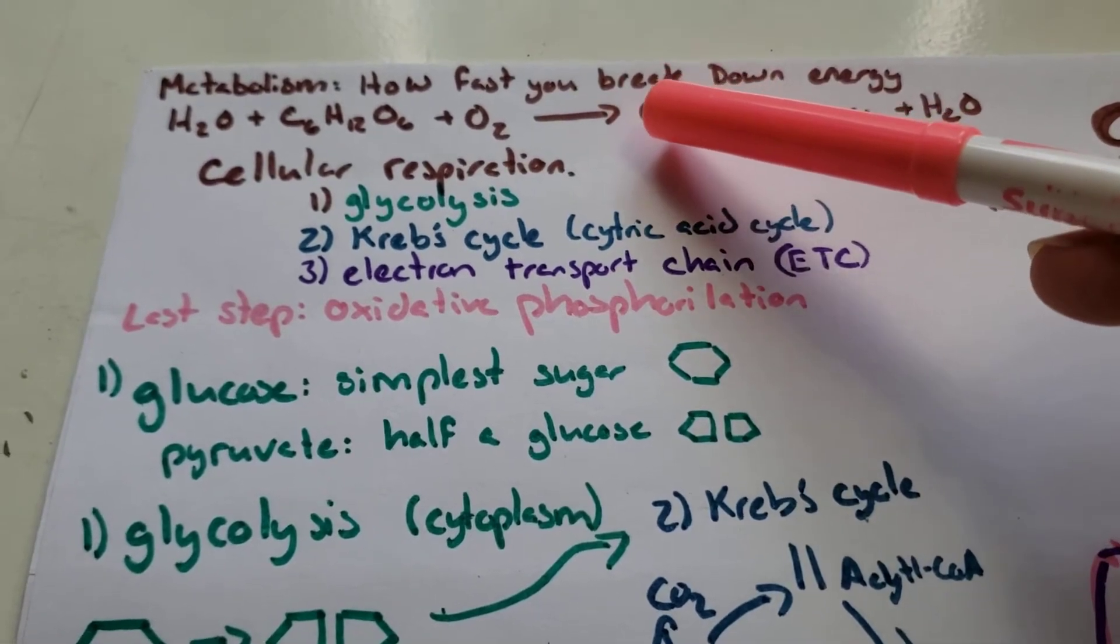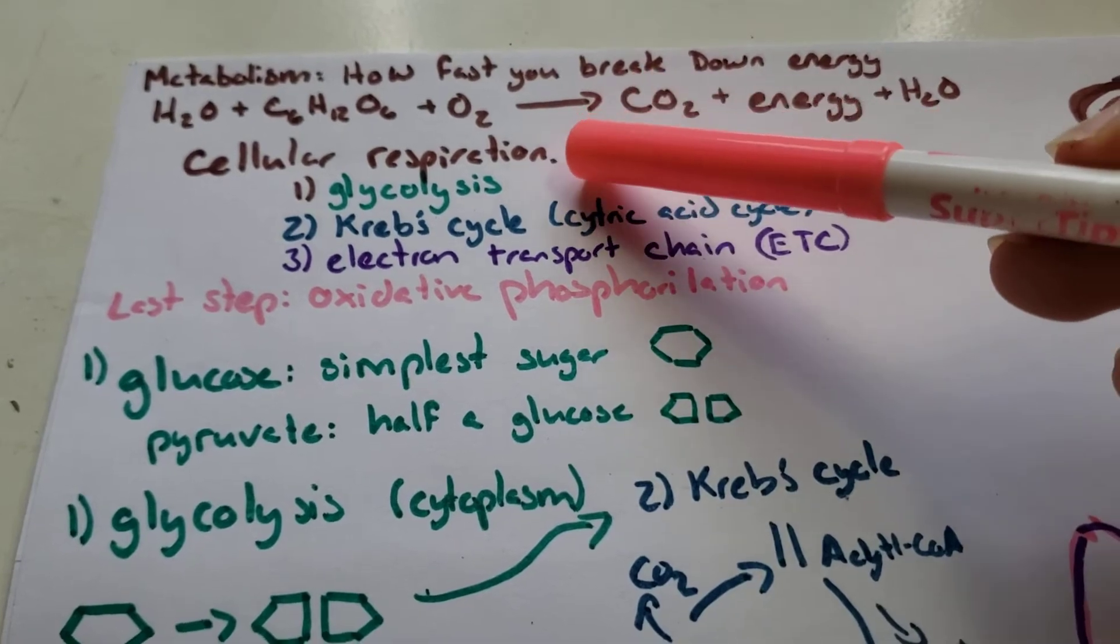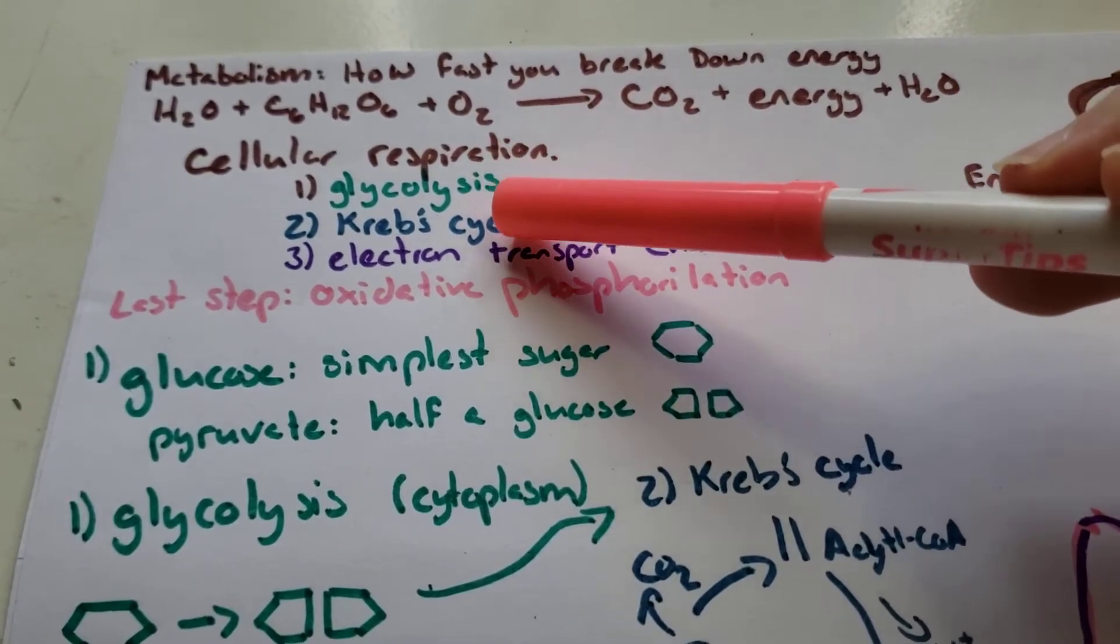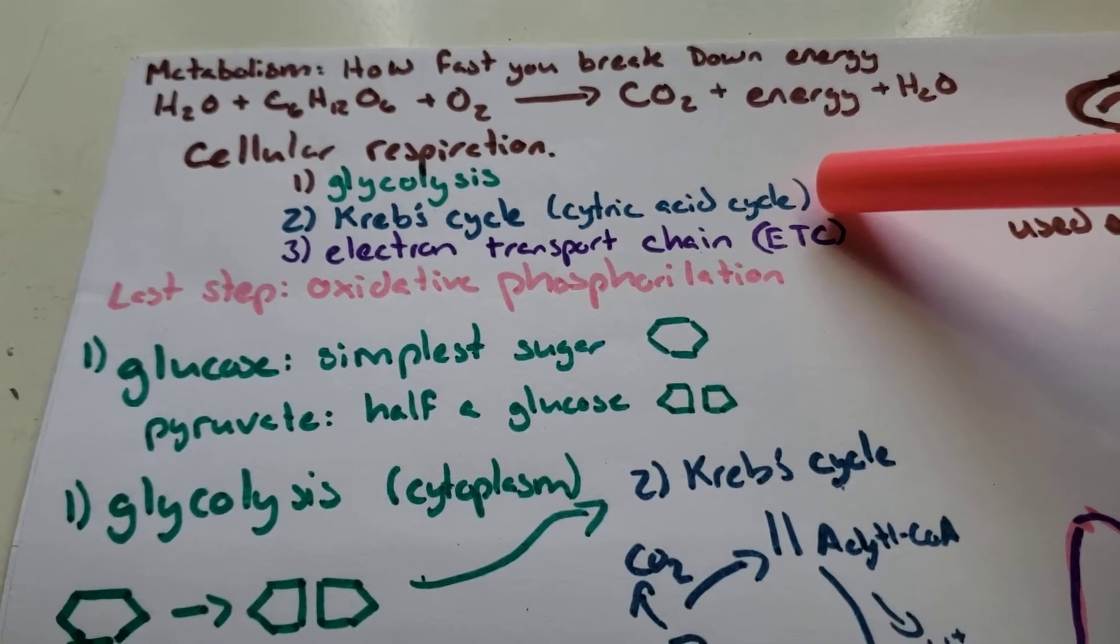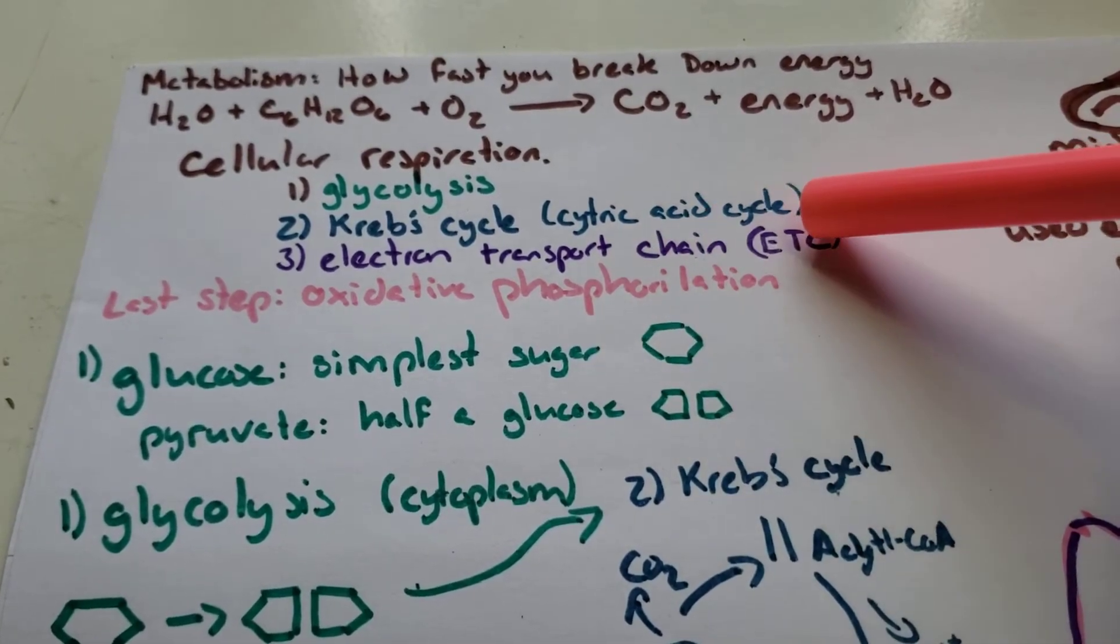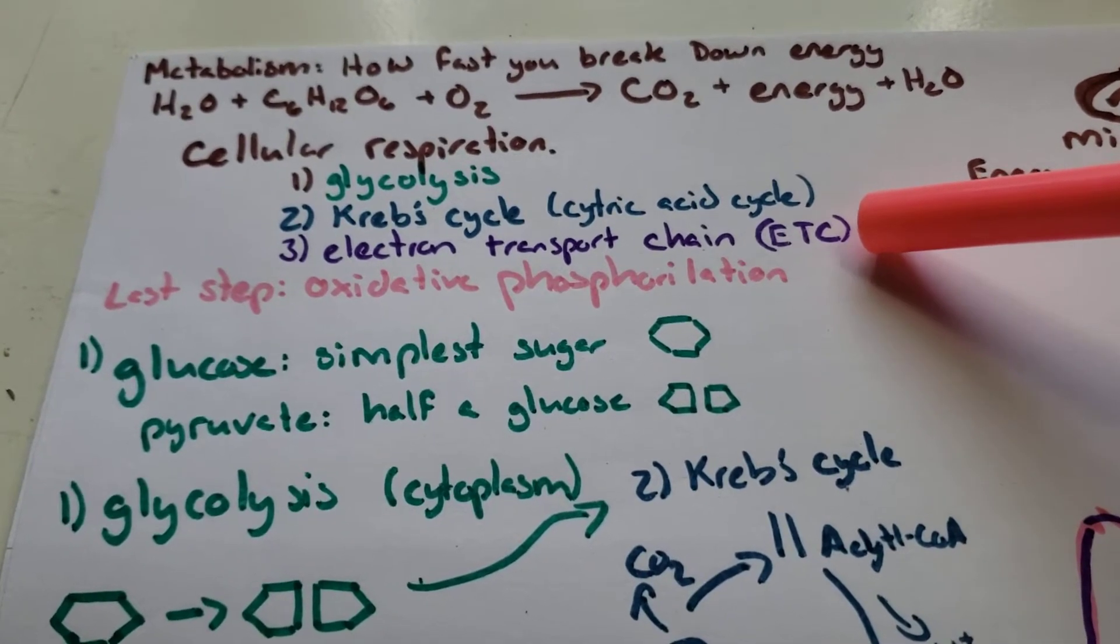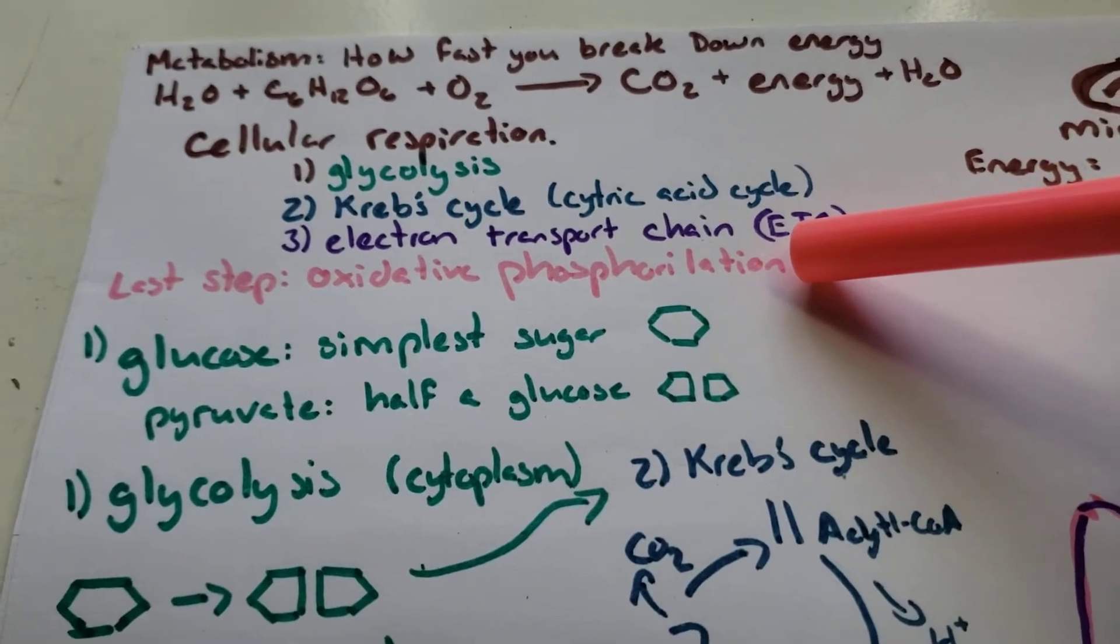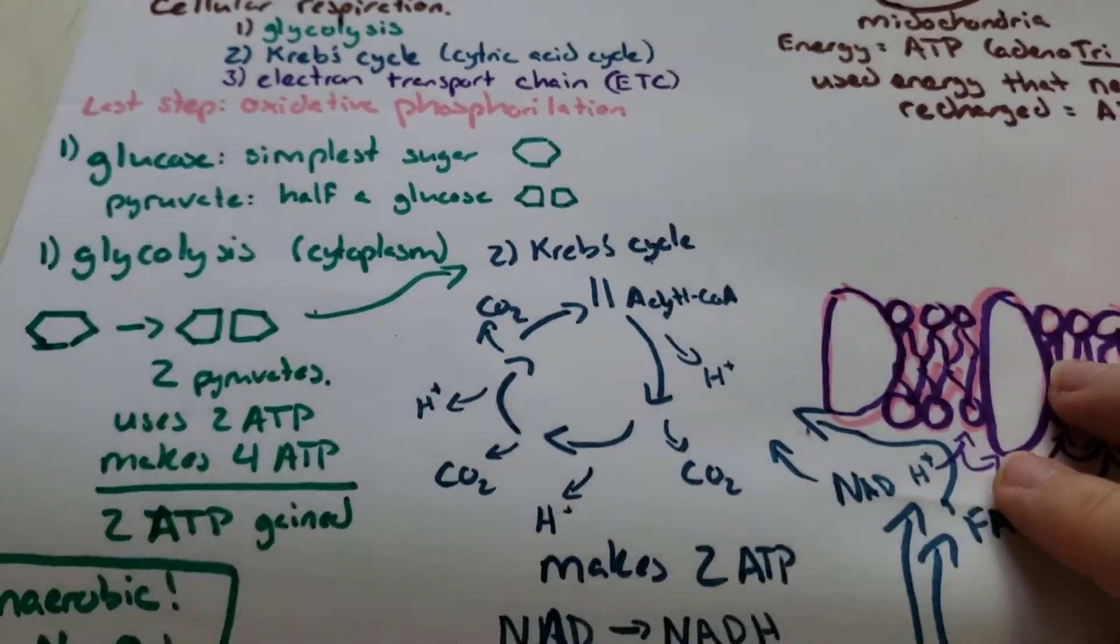Cellular respiration is this formula going in this direction, and it's what our bodies do. There are three stages of cellular respiration: glycolysis, the Krebs cycle, which can also be called your citric acid cycle, and the electron transport chain or ETC. And at the end of the electron transport chain, that causes a chemical reaction called oxidative phosphorylation. All of this happens in different parts of your cells.